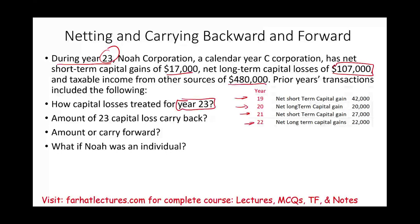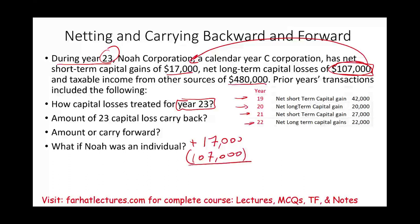Assuming NOAA is a corporation, the first thing we're going to do is use the losses to offset any gains. We have gains of $17,000 and losses of $107,000. So we're going to wipe out all the gains — we don't have to pay taxes on the gain. In fact, it's not only that we don't have any capital gains to pay taxes on; we're going to have $90,000 of excess losses. What can we do with this $90,000 of excess losses?